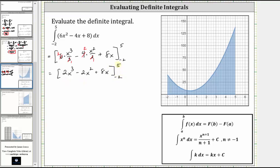And now let's find big F of 5 minus big F of negative 2. So we first substitute 5 for x, which gives us 2 times the cube of 5, minus 2 times the square of 5, plus 8 times 5.